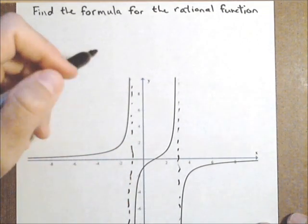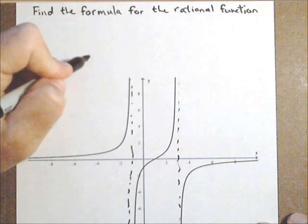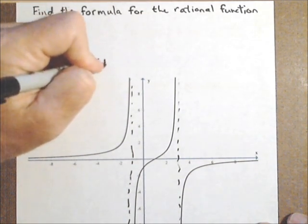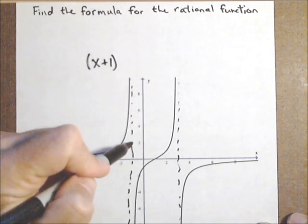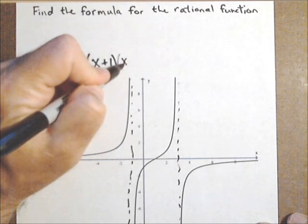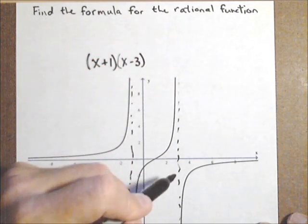So that's going to tell me what the denominator is going to look like. So the denominator of my rational function will have an x plus 1, which will give the vertical asymptote at negative 1, and an x minus 3, which will give the vertical asymptote at 3.